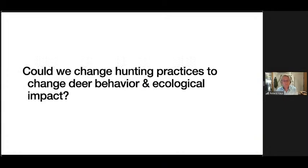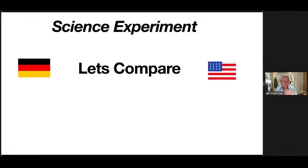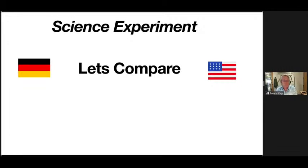There are signs that in some places we have too many deer, or they're getting too bold. Could we change hunting practices to change deer behavior and their ecological impact? One approach would be to change hunting rules in half of North Carolina and leave the other half alone — but that's complicated, would take a long time, and we don't know how long deer would take to respond. So we decided to take a comparison approach between North Carolina and Germany, where hunting rules are very different.